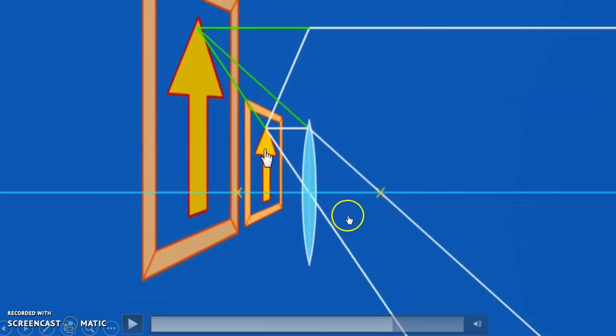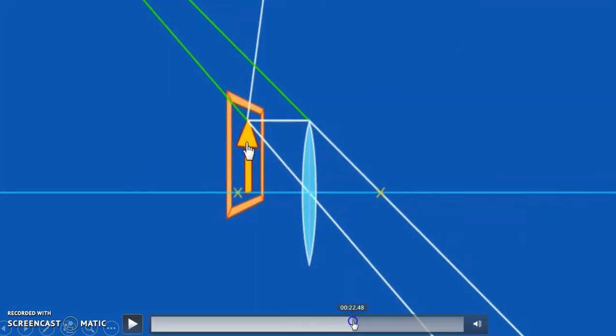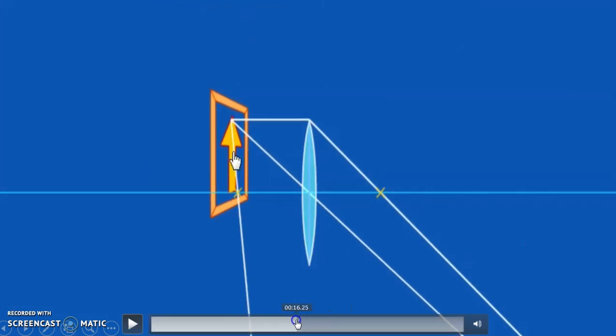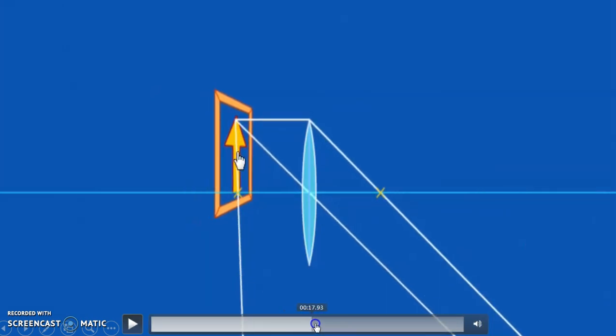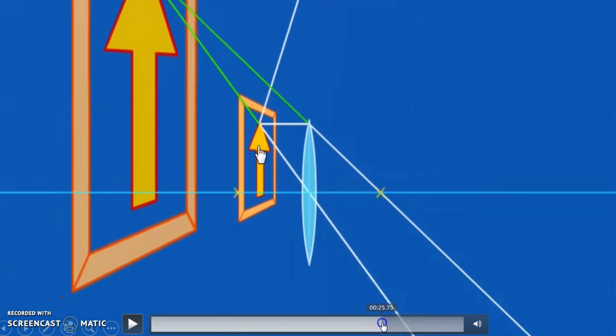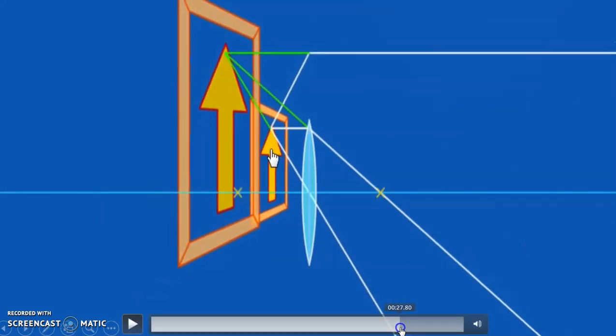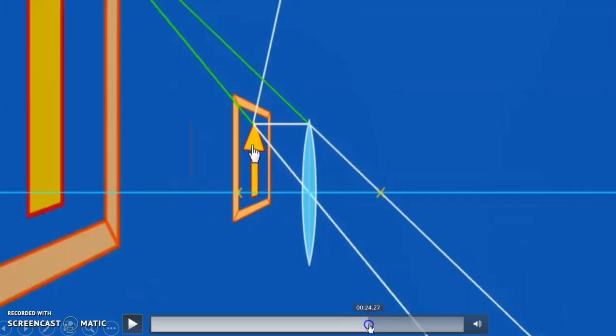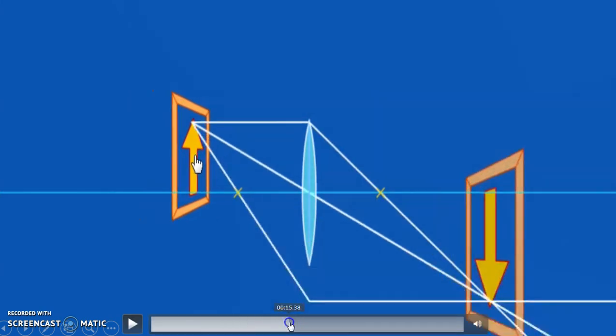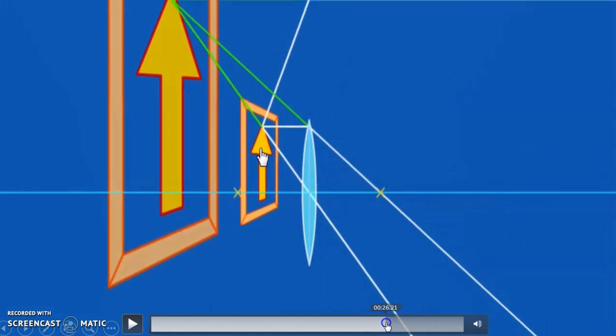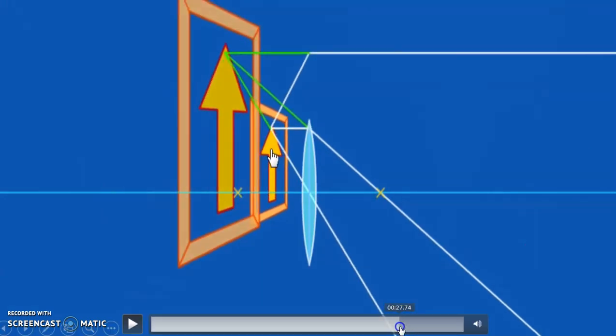It basically, right now at this point here, the image has become from a real image, something that can be captured on the screen, to a virtual image here, something that cannot be captured on the screen. So an example would be a magnifying glass. So my image, you can see, it becomes bigger. And you do notice one other thing, from being inverted, if it's on opposite side, you'll be inverted, and if it's on the same side, it is actually upright.